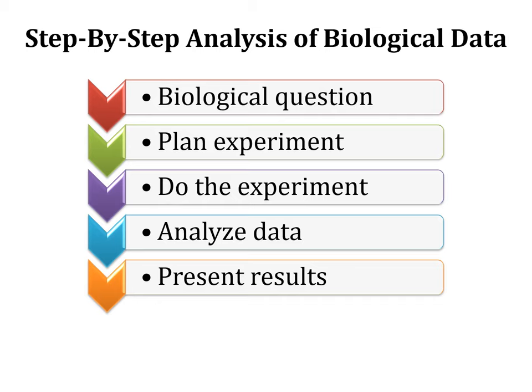A quick review of the step-by-step approach: you have a biological question, you plan an experiment — which involves formulating the biological hypothesis, formulating the statistical hypothesis, defining the variables, and choosing the statistical test — then you do the experiment, analyze your data using statistics, and finally present your results. This is the summary of research design that you can employ.